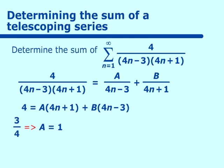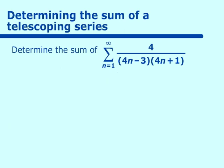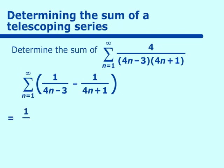Putting it back into our partial fractions, we get the sum from n equals 1 to infinity of 1 over (4n-3) minus 1 over (4n+1). Expanding out, we get 1/1 minus 1/5, that's our first set of terms, plus 1/5 minus 1/9.